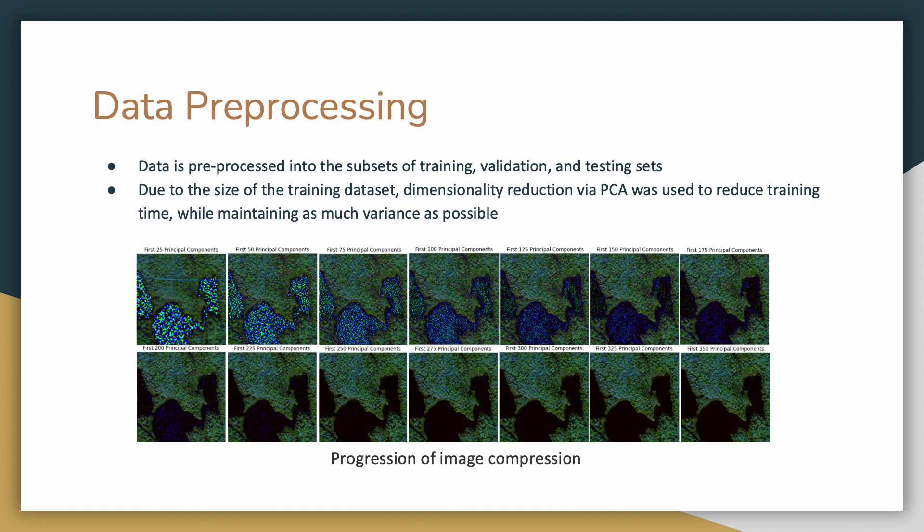We performed PCA on a random sample of 100 training images from both classes and then split the image into three RGB channels and applied PCA iteratively to each channel. The image shows an example of the progression of image compression from 25 principal components to 350 principal components. As you can see, the more dimensions there are, the clearer the image becomes.